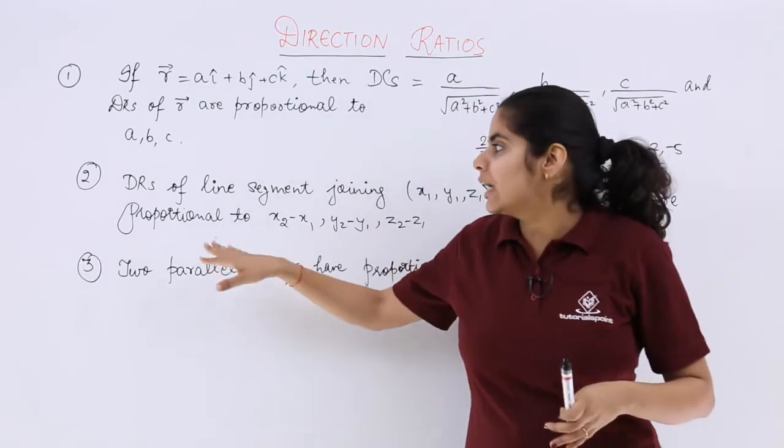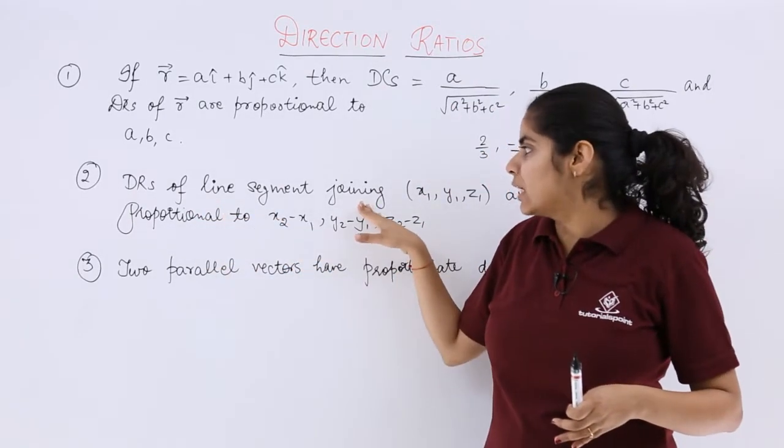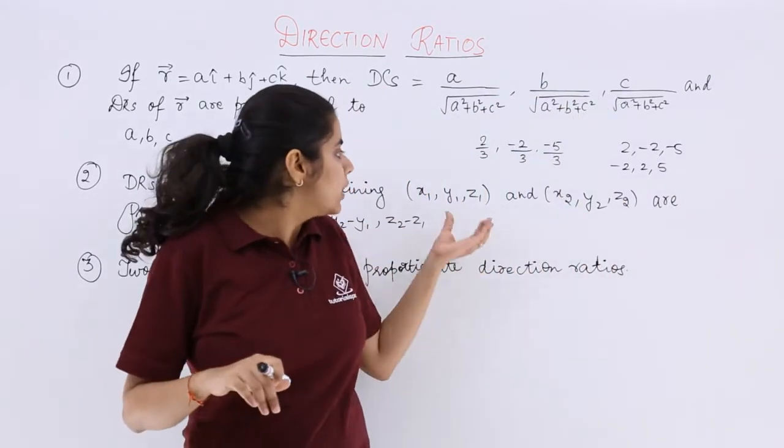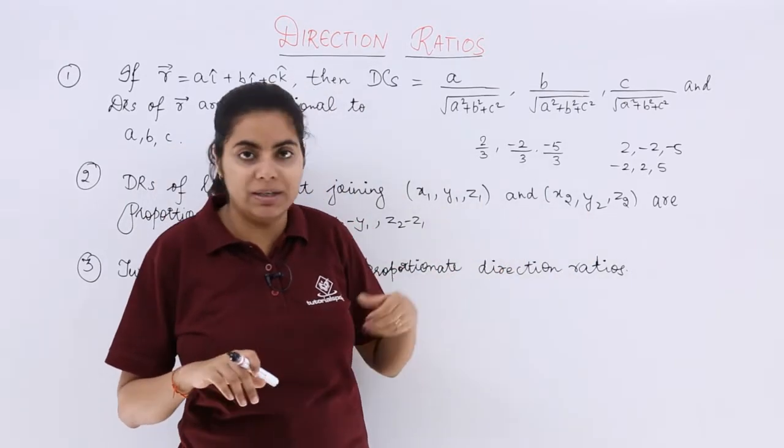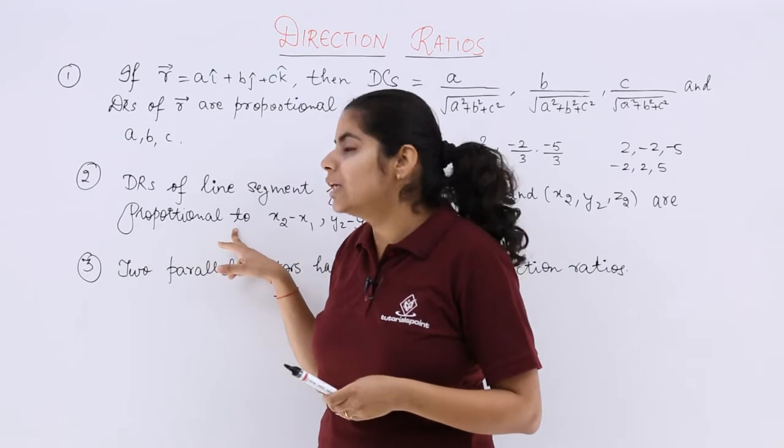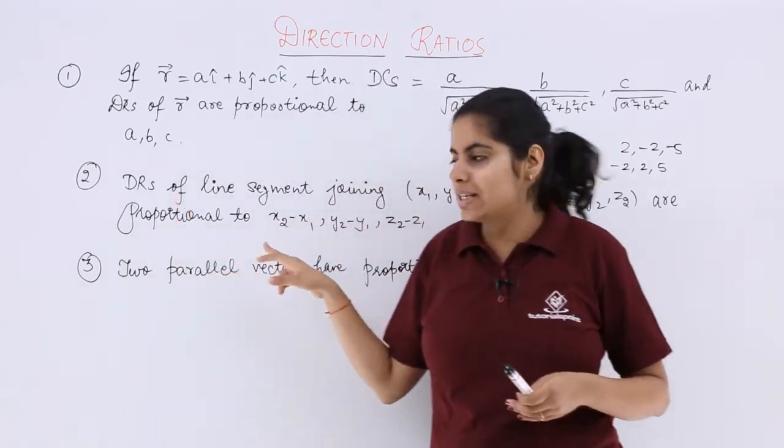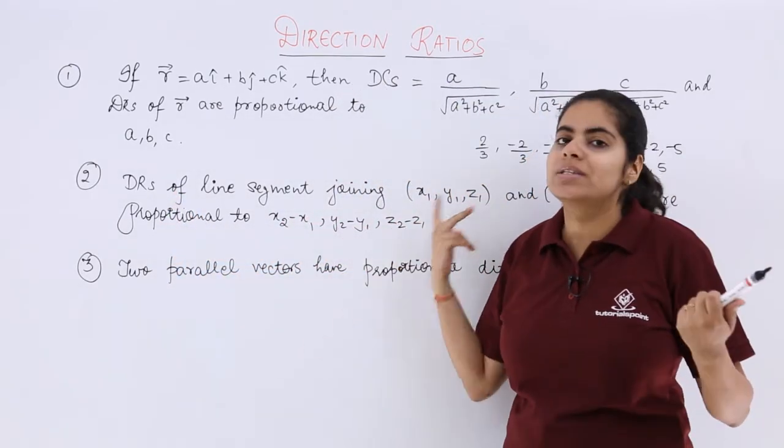What about the second point? The second point is direction ratios of line segment joining x1, y1, z1 coordinate and x2, y2, z2 coordinate are proportional to x2 minus x1, y2 minus y1, z2 minus z1.